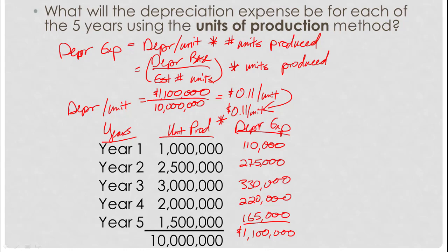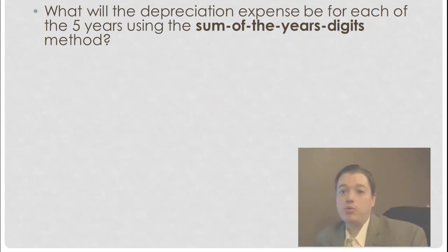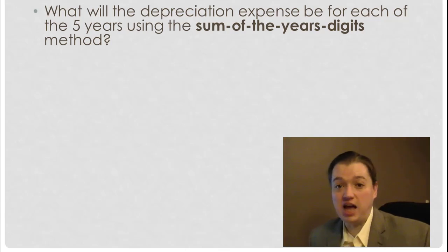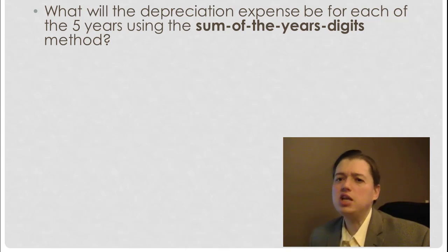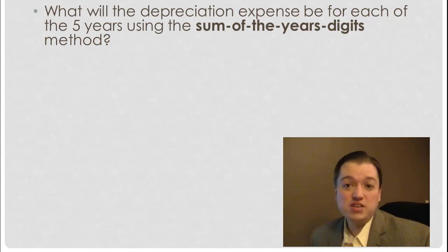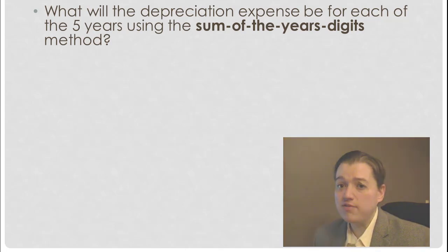The next method that we want to talk about might be new for you — this is the sum of the years digits method. I want to put in a disclaimer: nobody really uses this method anymore. It was very popular for a while, but it has gone out of style. Straight-line, double declining balance, and units of production are much more common. We still talk about it because it's on the CPA exam and because you need to be familiar with all these different methods so you can at least propose this option if the question ever comes up.